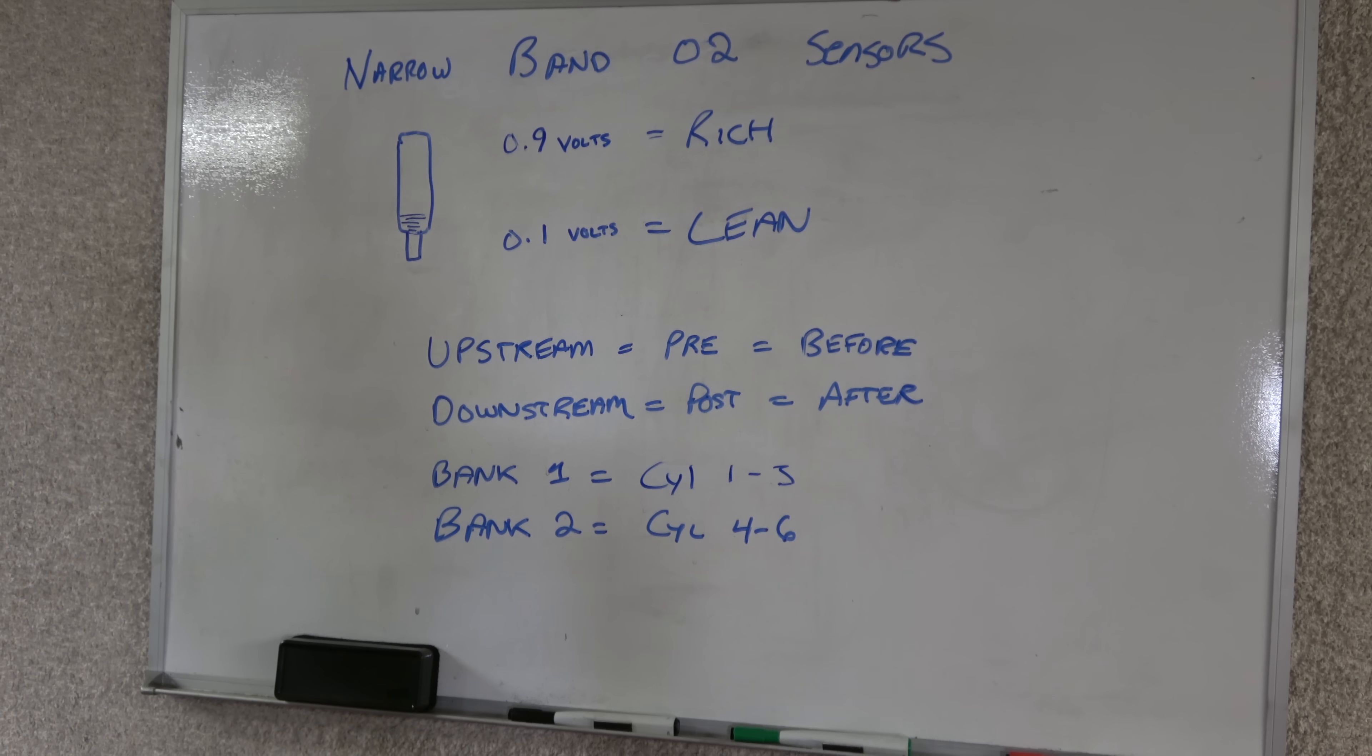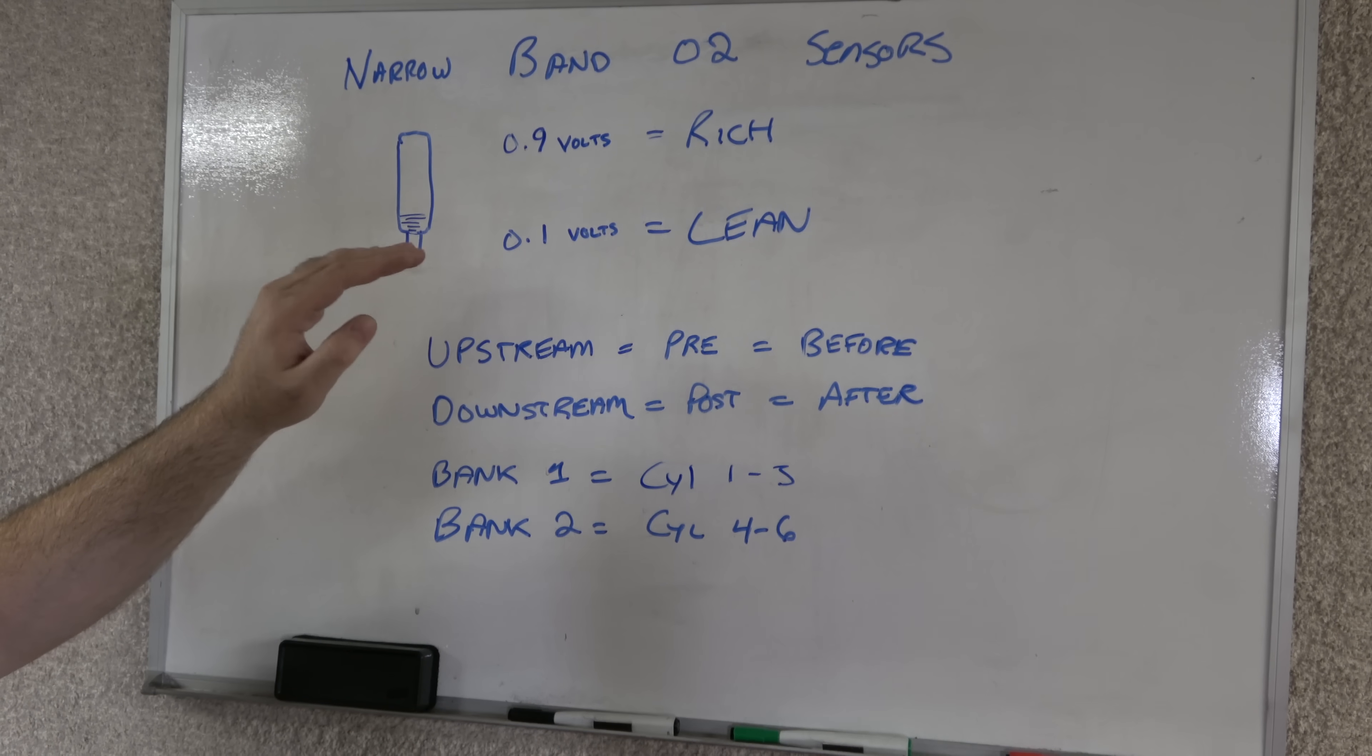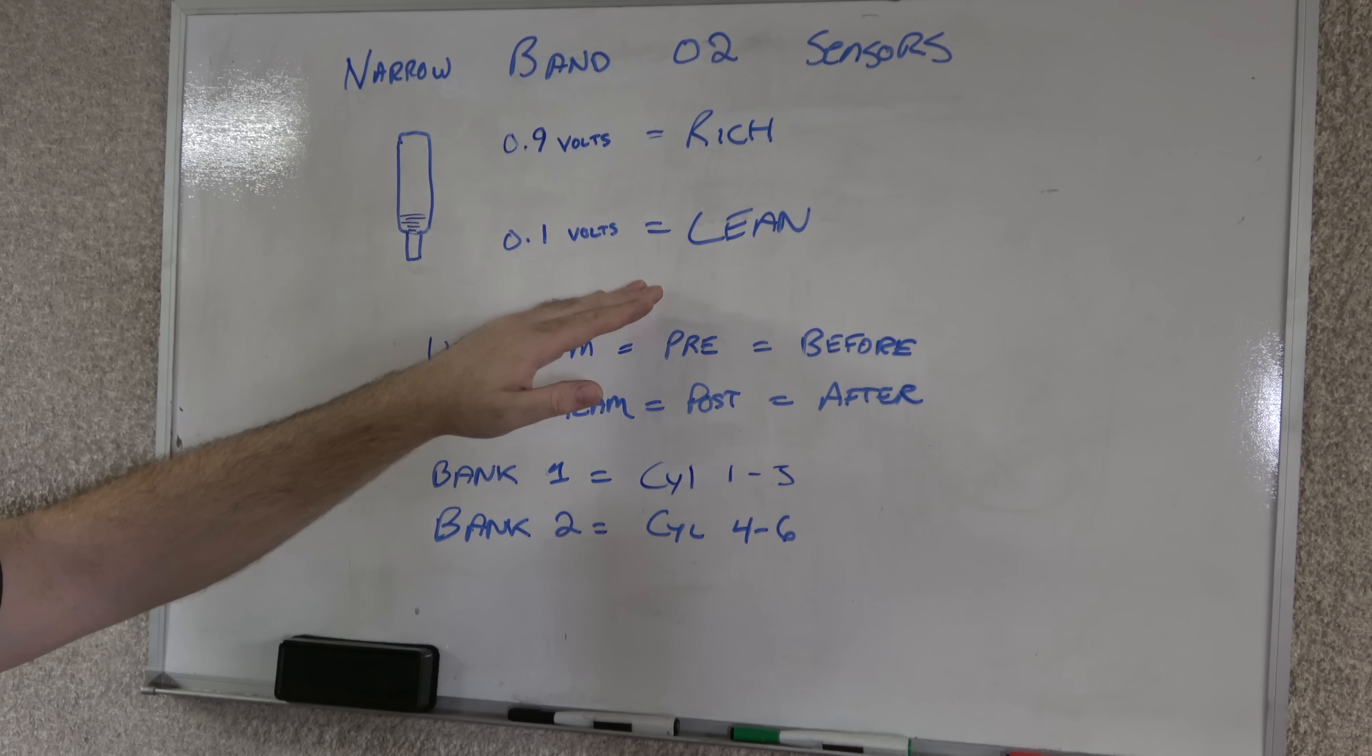So before we get into it, let's just cover narrowband oxygen sensors, what they are and what they do. Basically, they're a little sensor, it's screwed into your exhaust stream, and as the air flow, as the exhaust passes over it, it actually will produce a voltage. Oxygen sensor produces its own voltage, actually, as long as it's hot enough. They need to be particularly hot. So typically, they have heaters in them, and then they have a sensor circuit in them. So when there is an absence of oxygen, they're going to produce around 0.9 volts, which is a rich condition. And when there's abundance of oxygen, they're going to produce 0.1 volts, which is a lean condition.